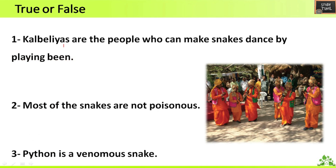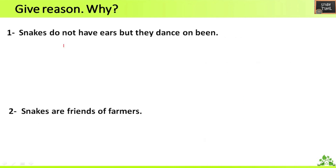Next, true or false. First question: Kalbelias are the people who can make a snake dance by playing the been — true. Second question: most of the snakes are not poisonous — true. Third question: python is a venomous snake — false, it is not a venomous snake.